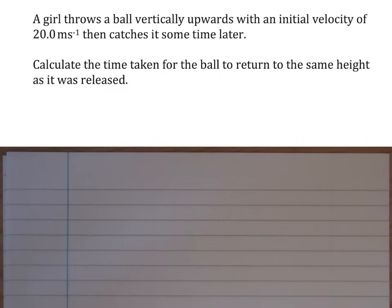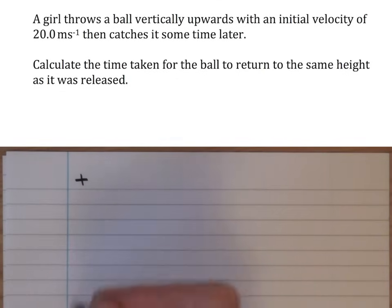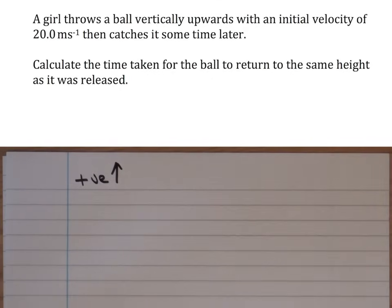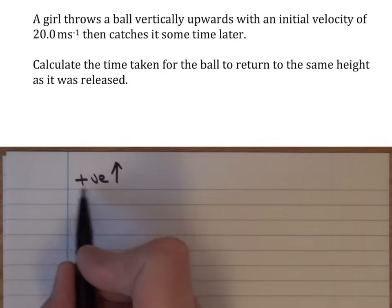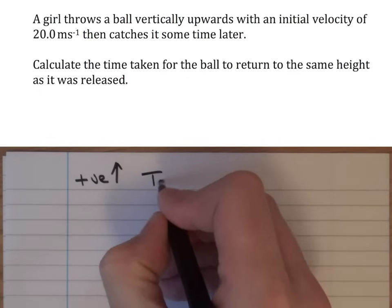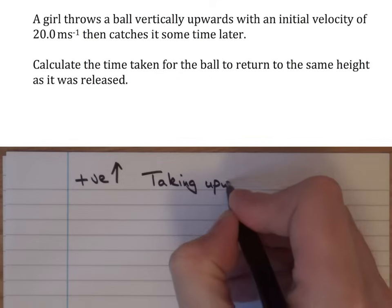So the question says, a girl throws a ball vertically upwards with an initial velocity of 20 meters per second, then catches it sometime later. Calculate the time taken for the ball to return to the same height as it was released. Now in this question I'm going to use something known as sign convention. So I'm going to be taking as positive the upwards direction.